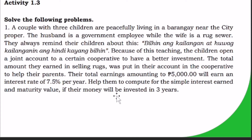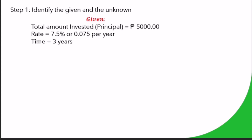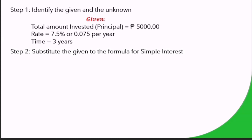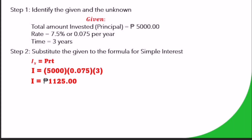Step 1 — Identify the given and the unknown. Given: total amount invested (principal) equals 5,000 pesos; rate equals 7.5% or 0.075 per year; time equals 3 years. Step 2 — Substitute the given into the formula for simple interest: I sub s equals P times R times T. So I equals 5,000 times 0.075 times 3. Therefore, I equals 1,125.00 pesos.